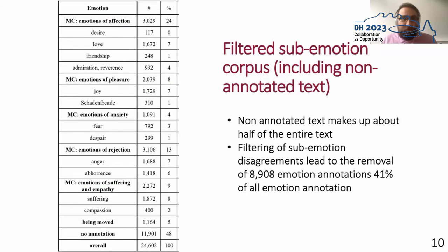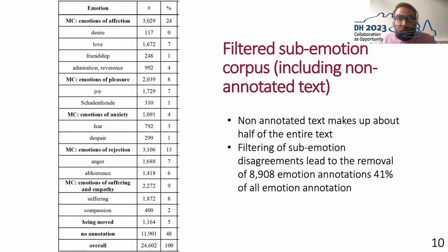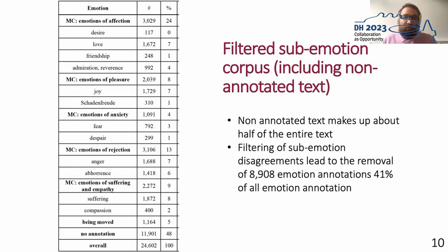Looking at this filtered sub-emotion corpus, we also added non-annotated text, which improved machine learning results. Adding this material shows it makes about 48% of all text — so around half of the text is not annotated with emotions. Furthermore, the removal of disagreeing emotions reduces the overall emotion annotations by around 40%, so disagreement among annotators is a significant number. The remaining annotation distributions, however, do stay quite similar.